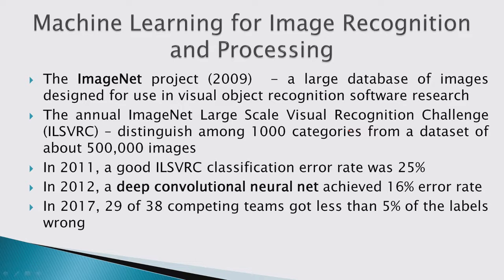Here is a brief history of how deep learning got started. A group of scientists at Stanford, including Fei-Fei Li, started the ImageNet project in 2009 — a large database of images for visual object recognition with an annual challenge to distinguish among 1,000 categories from about 500,000 images. In 2011, without good convolutional neural networks, a good classification error on this challenge was about 25%. But in 2012, the convolutional neural network called AlexNet achieved a 16% error rate — much better than all other competitors.